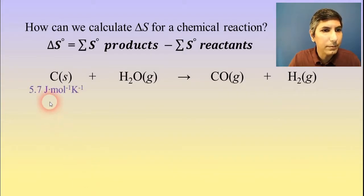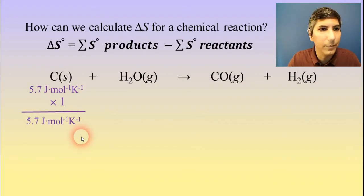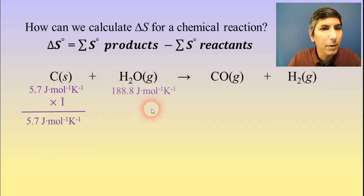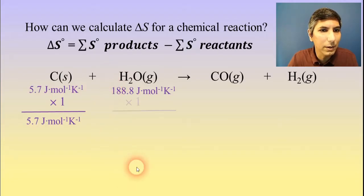So for carbon, it's a fairly low number, 5.7 joules per mole per Kelvin. And once again, we have to multiply this by the coefficient. There's only a one here, one mole of this stuff, so it's still just 5.7 joules. For the water vapor, we look up on the chart and see it's 188.8 joules per mole per Kelvin. And once again, the coefficient is one, so it's multiplied by one, so that doesn't change.